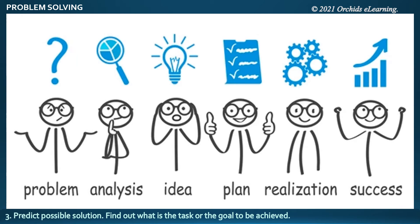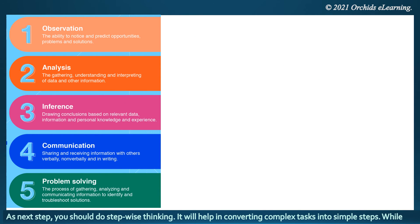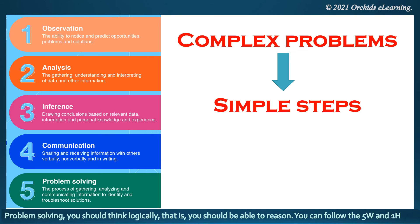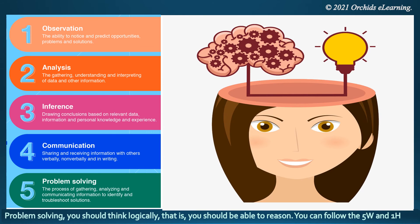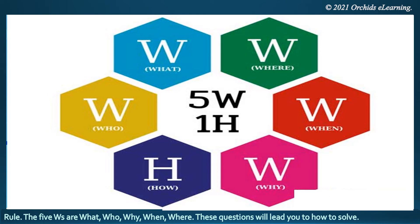Predict possible solutions and find out what the task or goal to be achieved is. As the next step, you should do stepwise thinking — it will help in converting complex tasks into simple steps. While problem solving, you should think logically, that is, you should be able to reason. You can follow the five W's and one H rule.